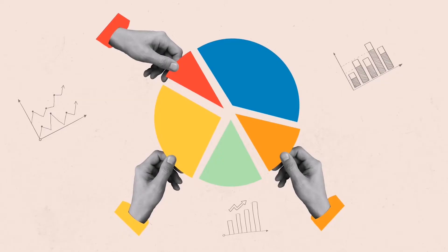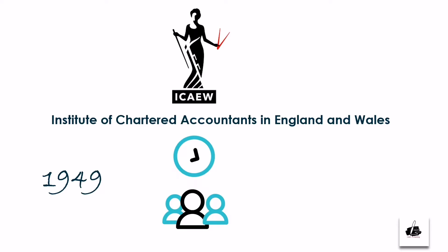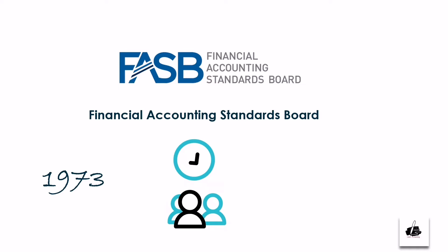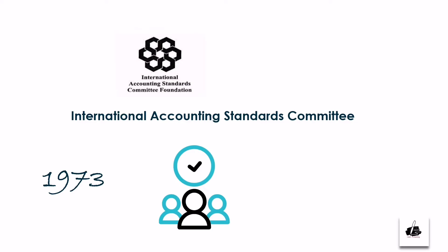In 1949, the Institute of Chartered Accountants in England and Wales was formed as a professional accounting body in the United Kingdom, providing guidance and oversight for accountants. In 1973, the Financial Accounting Standards Board was established in the United States to replace the Committee on Accounting Procedure and assume responsibility for setting accounting standards. In the same year, the International Accounting Standards Committee was formed to develop a set of international accounting standards, later known as International Financial Reporting Standards, IFRS.